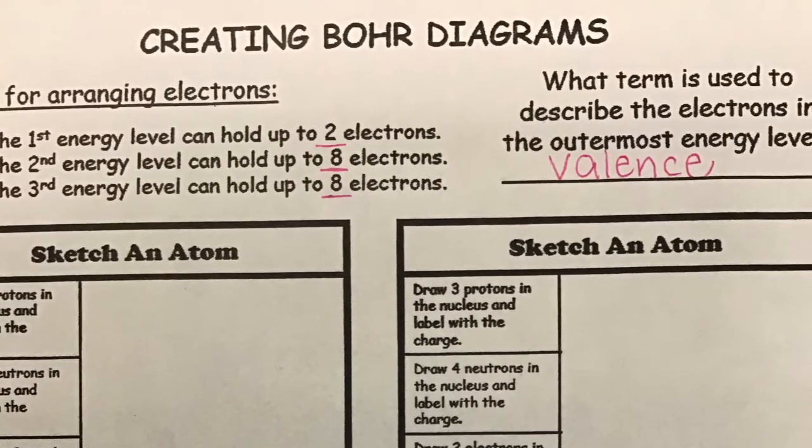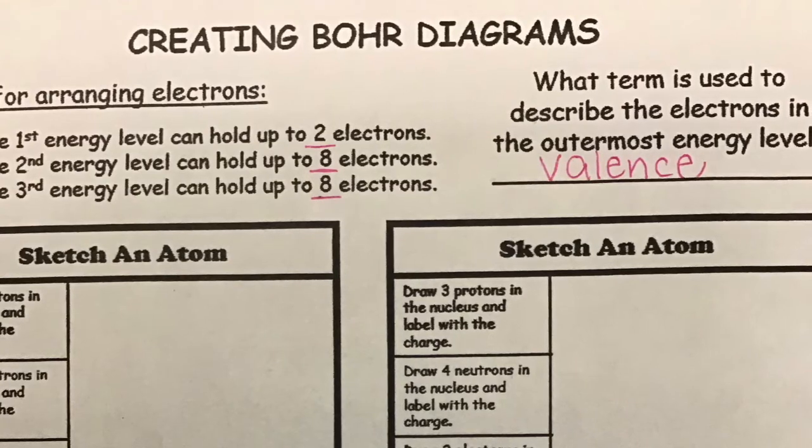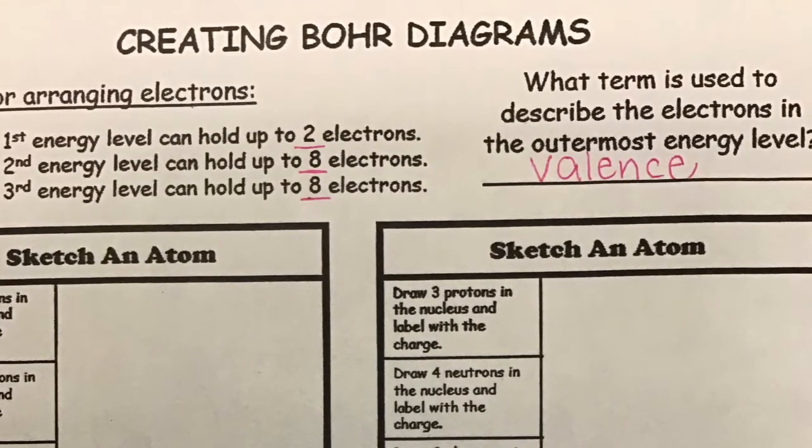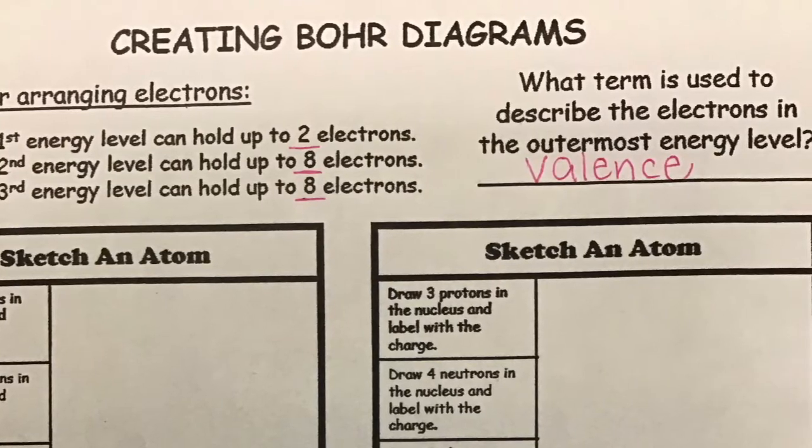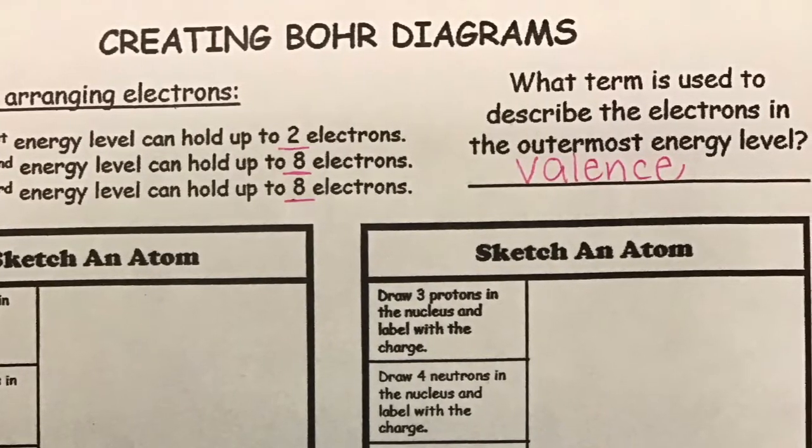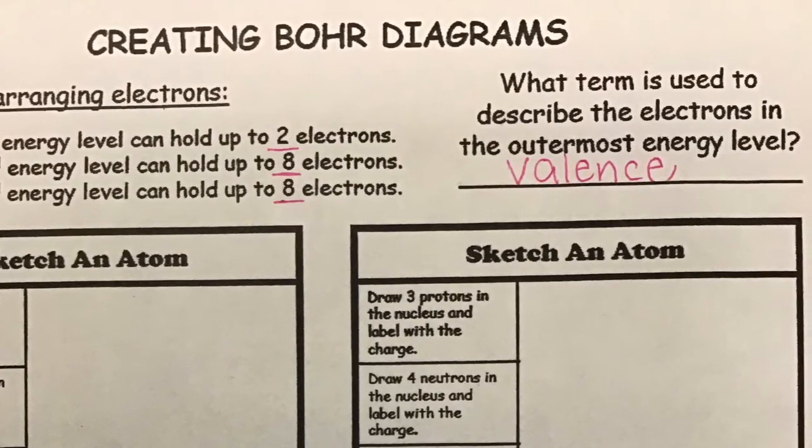The first energy level can hold up to two electrons before it is full and you must move on to the next level or ring. The second energy level can hold up to eight electrons and the third energy level can also hold up to eight electrons. If more electrons are needed, the fourth energy level can hold up to 18 electrons.